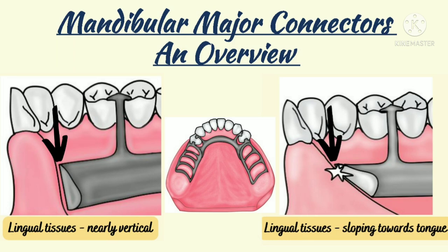Welcome back to the channel Dentistry Fight. Many of you had requested more videos on removable partial dentures, so here I am continuing with our RPD series of lectures. I've already covered various topics like components of removable partial dentures, their indications, types of RPD based on support, and even maxillary major connectors. In today's video we'll talk about mandibular major connectors, their specific requirements, and the methods to evaluate the space available for their placement.